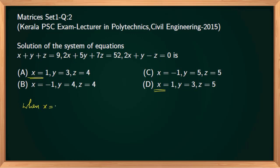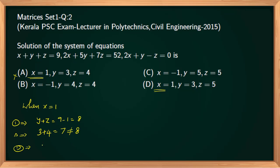When x=1, substituting in the first equation gives y plus z equal to 8. For option A, y=3 and z=4 gives 3 plus 4 equal to 7, not 8, so option A cannot be the solution. For option D, y=3 and z=5 gives 3 plus 5 equal to 8, which satisfies the first equation, so option D may be a solution.